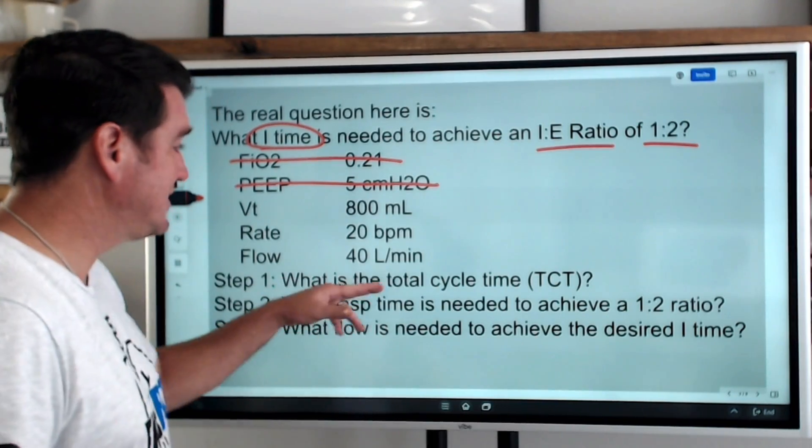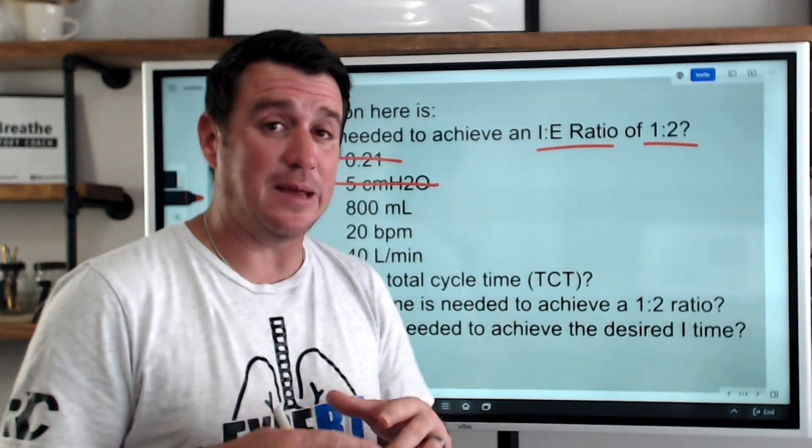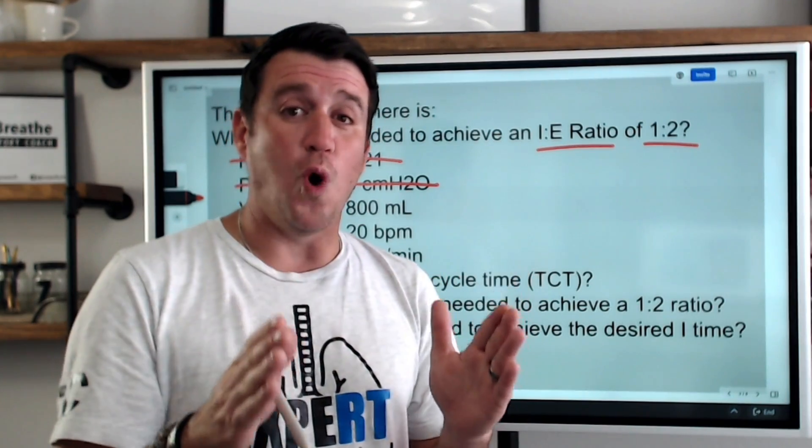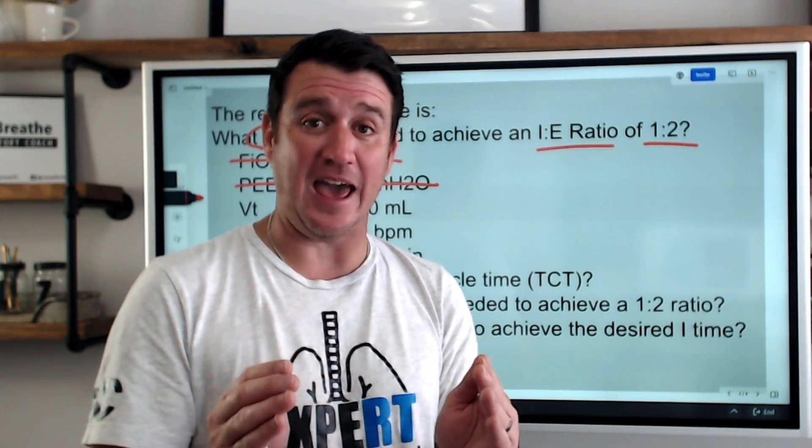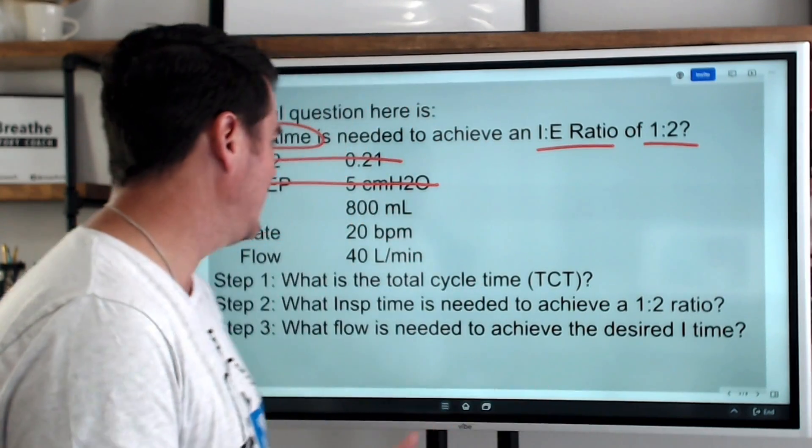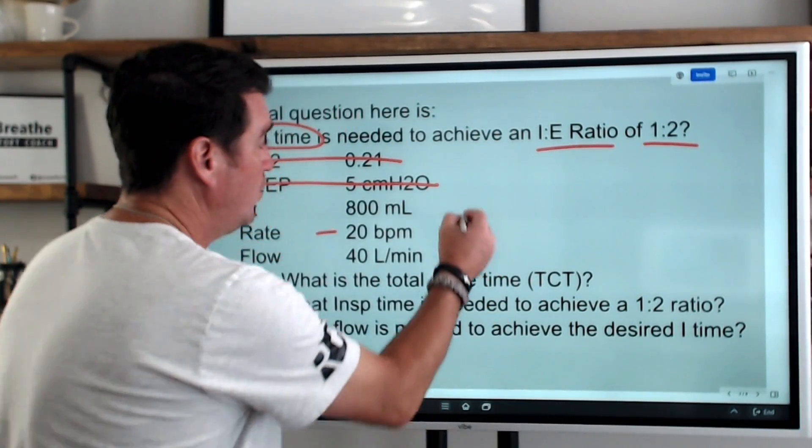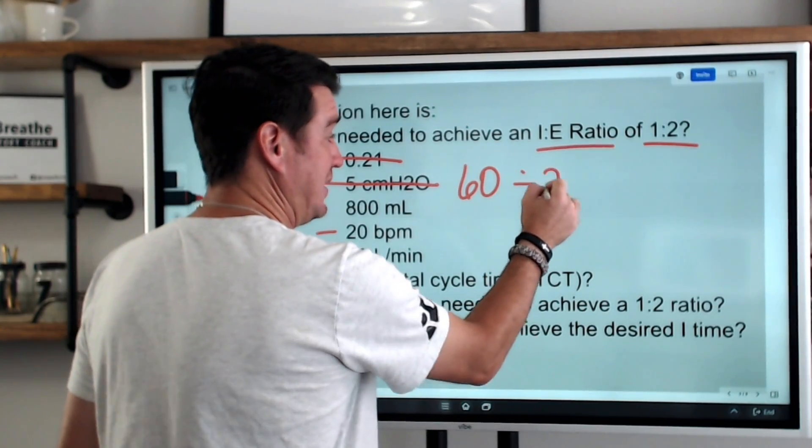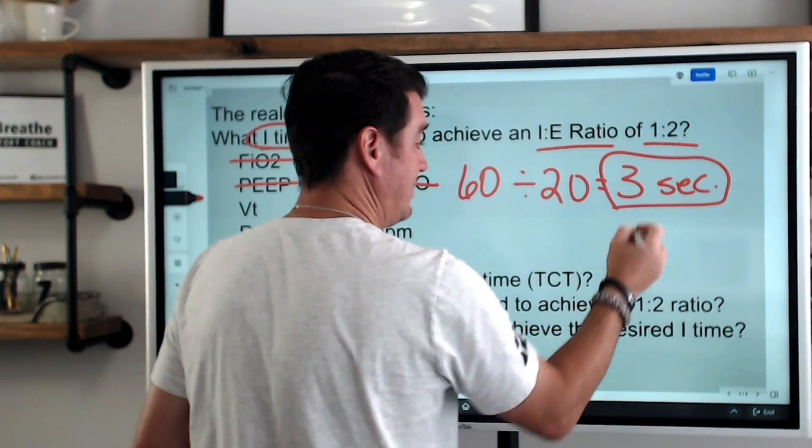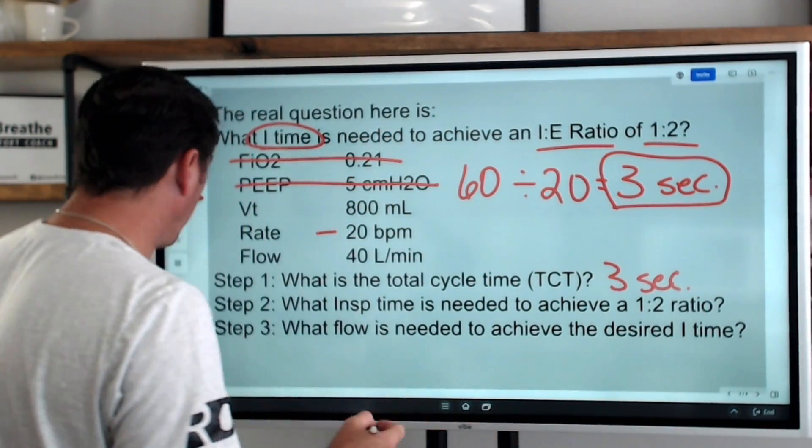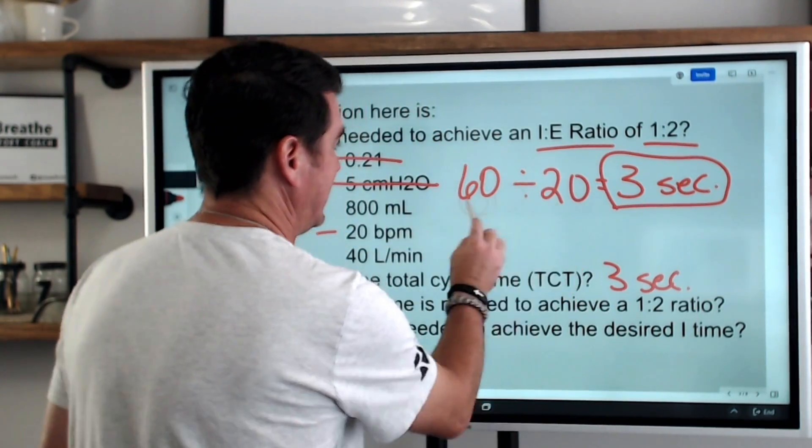So how do we answer this question? Step one, what is the total cycle time? How do we get total cycle time? It's very simple. Total cycle time is the completion of one breath, all of inspiration, plus all of exhalation. How long does that last before the next breath is coming? Well, when you tell a machine to deliver 20 breaths a minute, it's going to do that equally over one minute, which is 60 seconds. So simply divide 60 by 20. And we see that our total cycle time is three seconds.